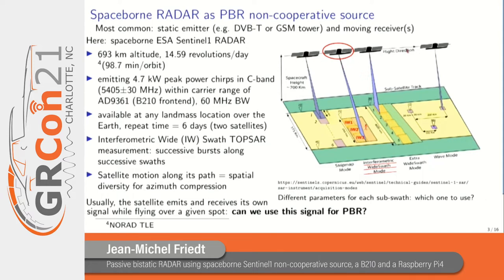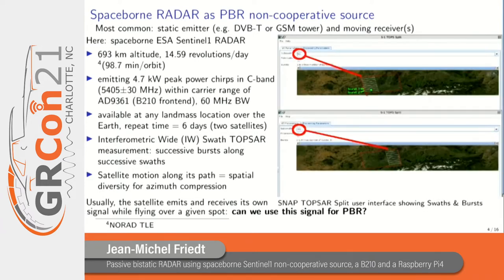If we have a target on the Earth's surface, we need to know which swath is illuminating it, because radar parameters evolve along this illumination scheme. The motion of the satellite provides the spatial diversity needed for azimuth compression. Using the ESA SNAP toolbox for processing Sentinel-1 level 1 data, you can see interferometric-wide swaths 1, 2, and 3 and their bursts. Assuming our target is at a given location, we expect illumination under interferometric-wide 1 parameters between bursts 2 and 3.